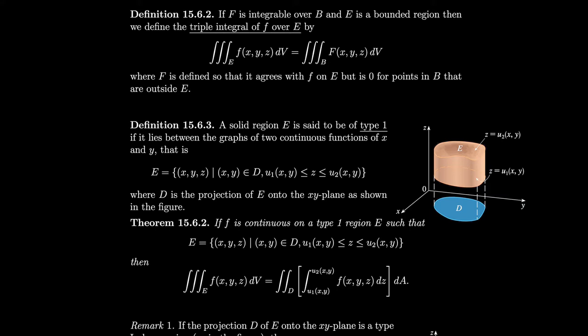If f is integrable over box b and E is a bounded region, we define the triple integral of f over E by the triple integral of capital F over b, where capital F agrees with f on E but is 0 for points in b outside E. This is the same way we defined double integrals over general regions — except that instead of drawing a rectangle around our 2D domain, we draw a box around our 3D domain. If the function is outside E, we set it to 0, so we can integrate over the box instead.